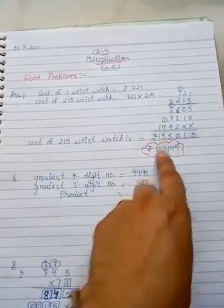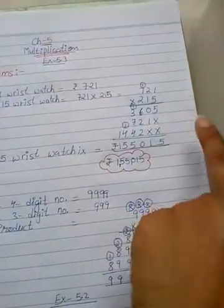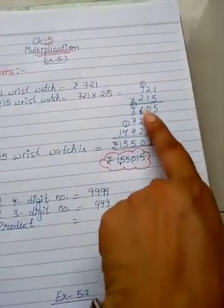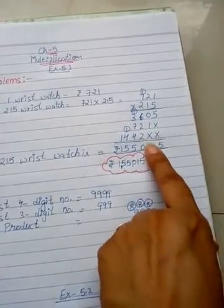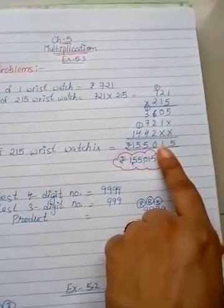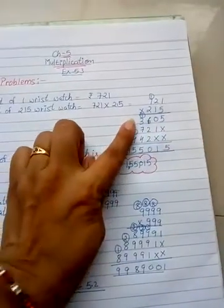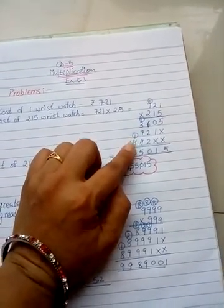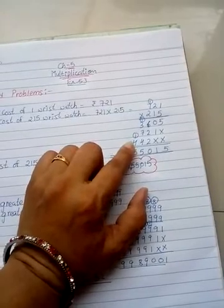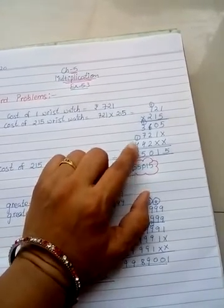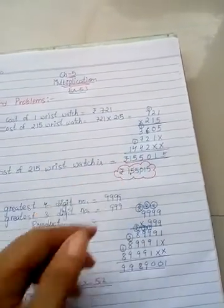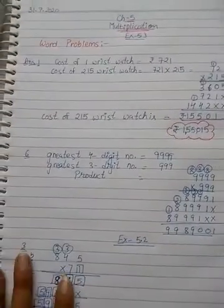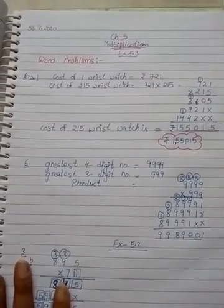No carry forward, nothing. Just add: 5, 1 is 6 plus 2 is 8, plus 2 is 10, write 0, carry 1. 3 plus 1 is 4, and 7 is 11, plus 4 is 15. Carry 1. 4 plus 1 is 5. So the cost of 215 wristwatches is ₹1,55,015.